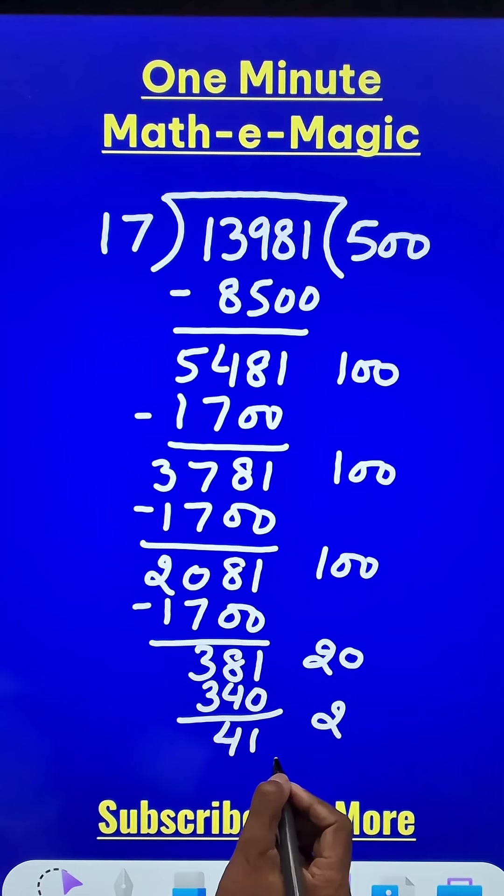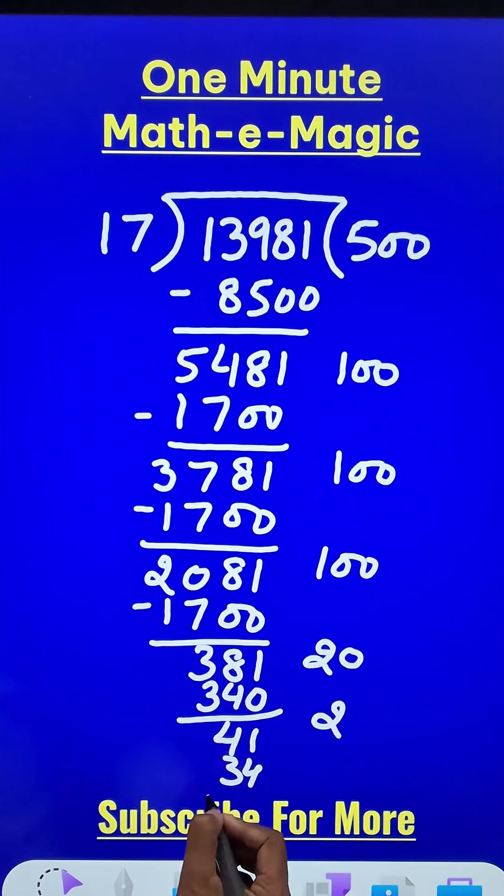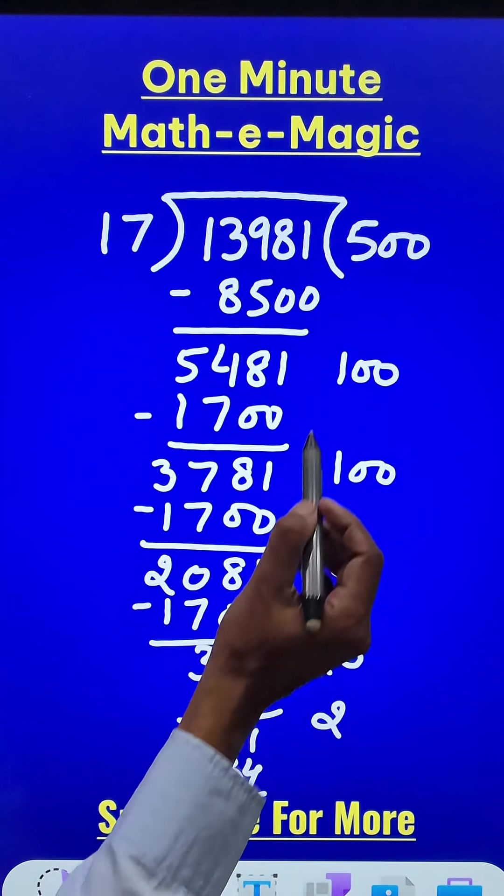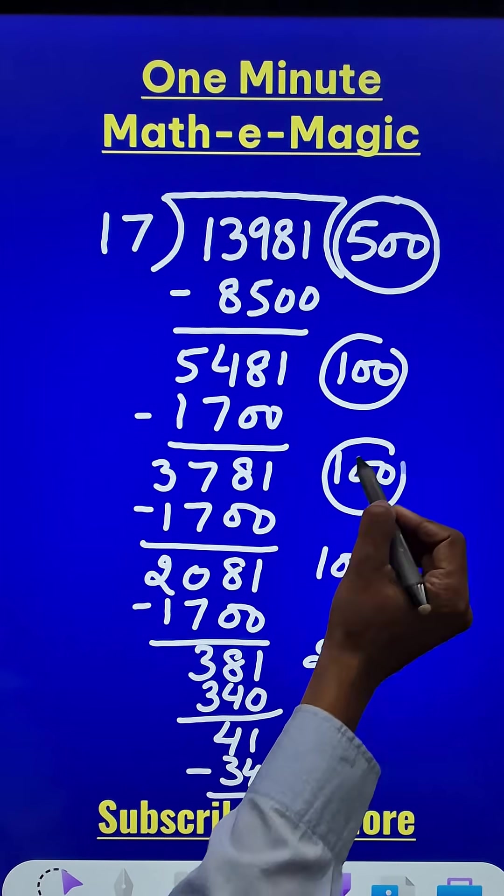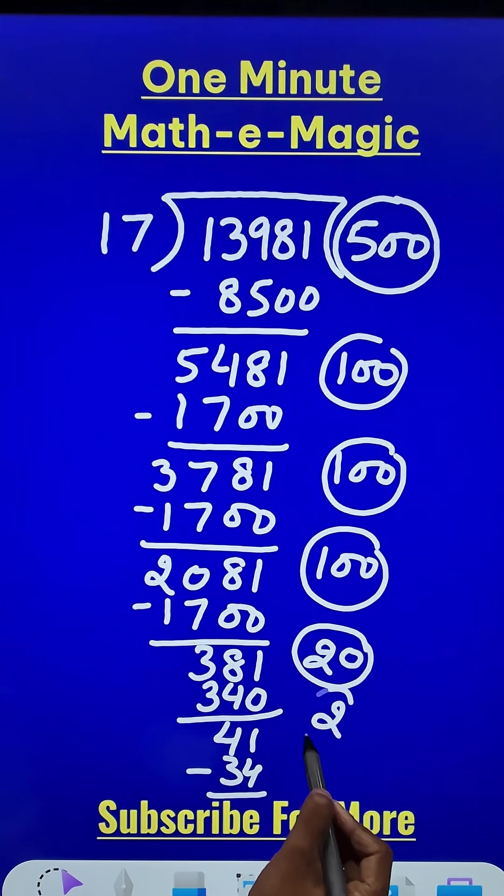So 17 two times again will give you 34 and now the division will terminate because these are all the partial quotients: 500, 600, 700, 800, 820, 822.